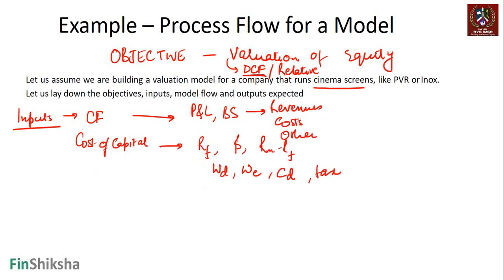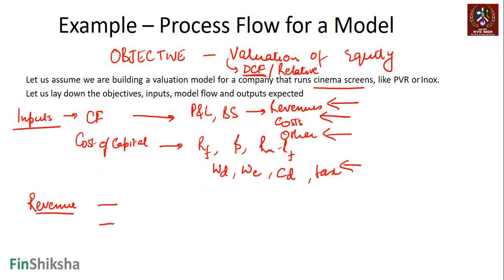I have to arrive at some sort of assumptions around this. Now, if I zero down on the last numbers, then I have to find out how revenues are coming in. So my assumptions will start flowing in in terms of the flow of revenue. Once I have the inputs defined, how does a cinema hall make revenue? Revenue can be on three headers: it could be ticket sales, it could be food and beverage, and it could be advertisements. Remember when we go to a cinema hall, we see those advertisements.